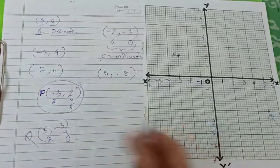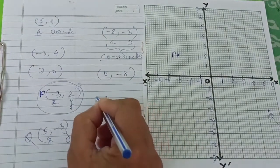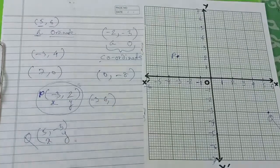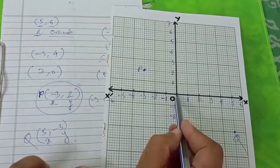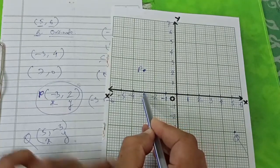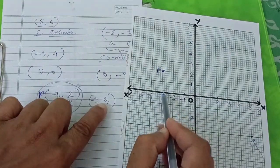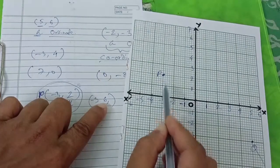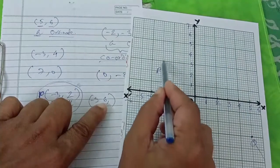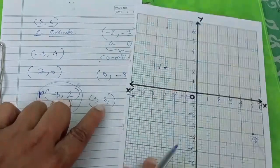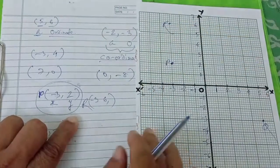Another example: minus 3, 6. X is minus 3, so from the origin we go left: 1, 2, 3. Then Y is 6, which is positive, so we go up: 1, 2, 3, 4, 5, 6. So this is the point minus 3, 6. If this point is R, we write R here.